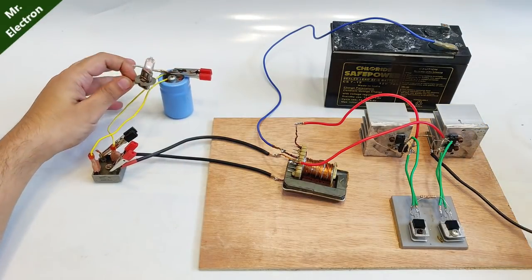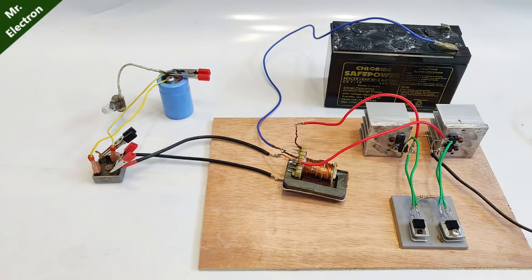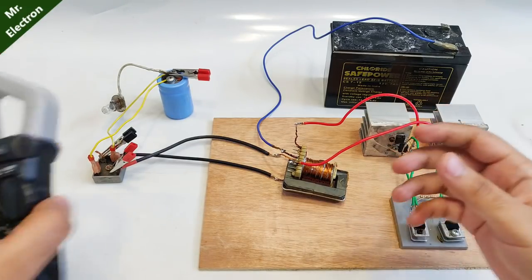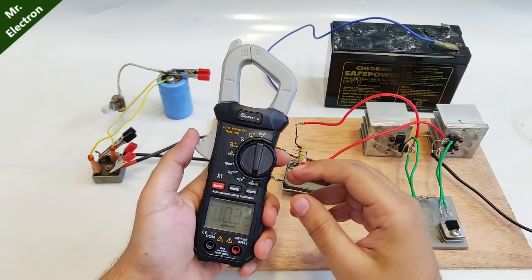The bulb is glowing and the circuit is handling the load, but we also have to measure the efficiency, the intake and the output of the current. So once again, the current test at the input.